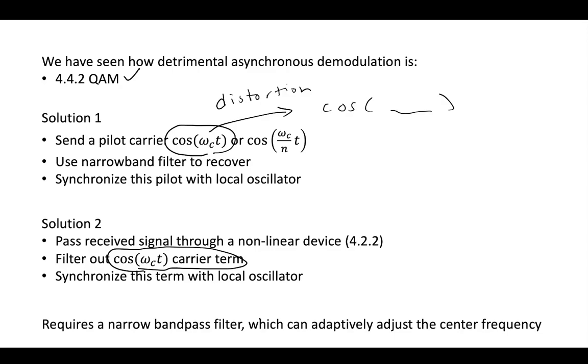However, both of these processes require some kind of filter or narrow band filter, which could adaptively adjust to any of that distortion, so any of that omega C plus some extra distortion. So all of these require some kind of narrow band pass filter and something that can kind of adapt to whatever this plus or minus omega might be. And so all three of our bandwidth efficient forms are going to require this.